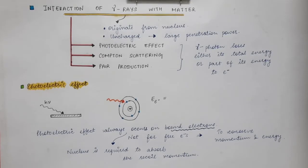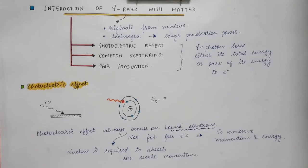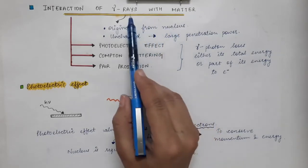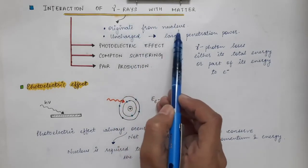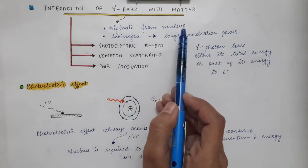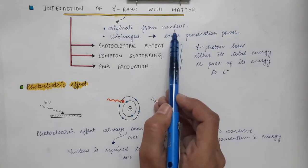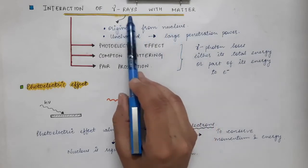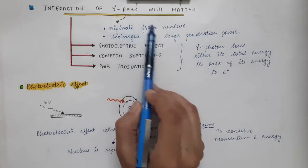The gamma radiations have properties completely different from heavy charged particles and light charged particles. Gamma radiations are uncharged — they are neutral radiations, they do not have any charge — therefore their interaction with matter is also completely different. Gamma rays originate from the nucleus. As we have studied previously, gamma radiations are emitted when the nucleus makes a transition from one energy state to another, when the nucleus de-excites from a higher excited state to a lower energy state. So their origination is from the nucleus.